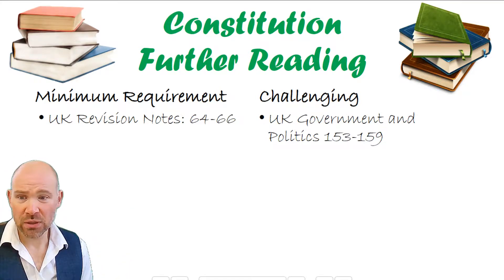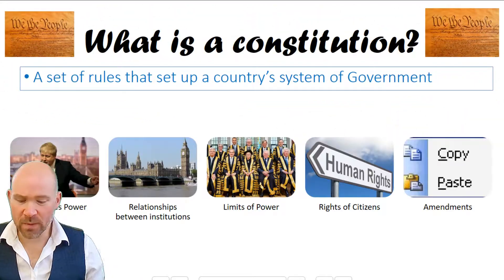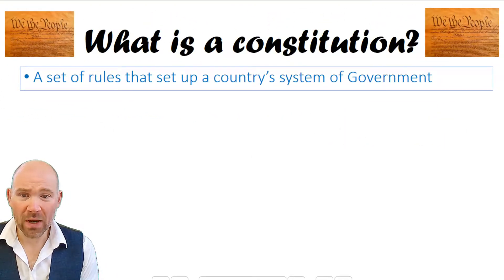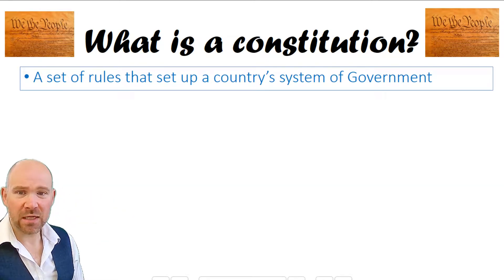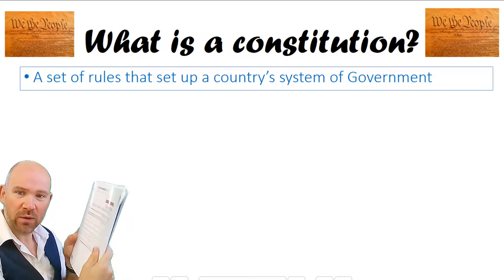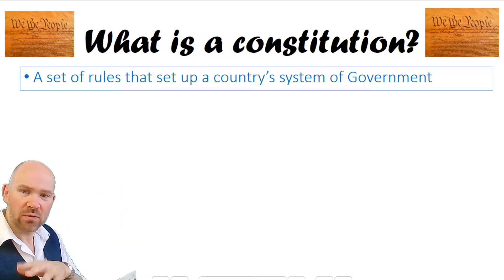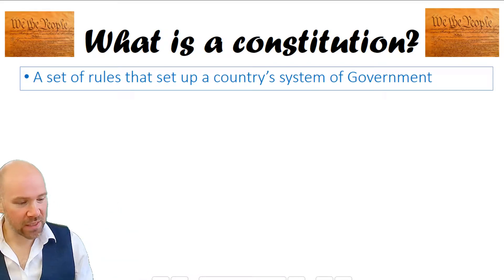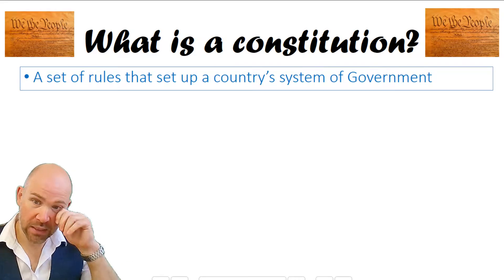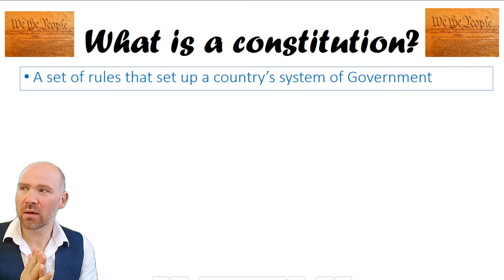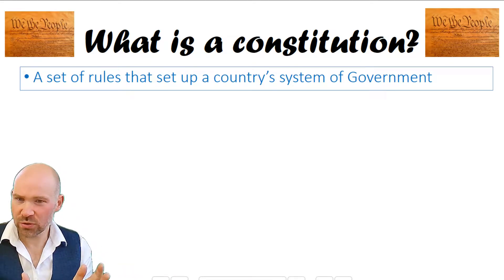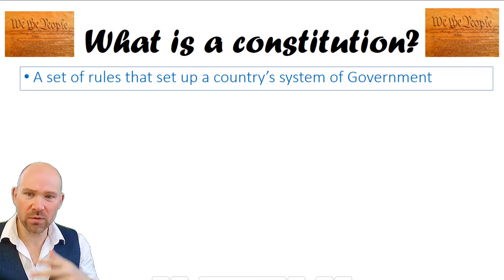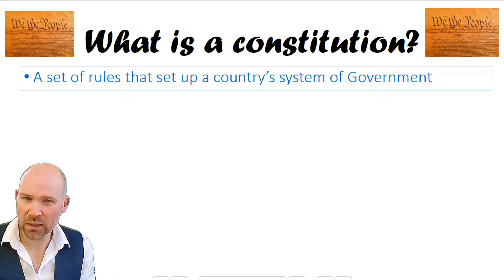So what is a Constitution? At a very basic level, it's a set of rules that set up a country's system of government. It tells you what the president or prime minister does, what parliament does, what the judiciary does. North Korea has a constitution, believe it or not. But it's the rules for how a country is run — not everyday criminal laws about what citizens should or should not do, but the powers of the individuals involved in running the country.